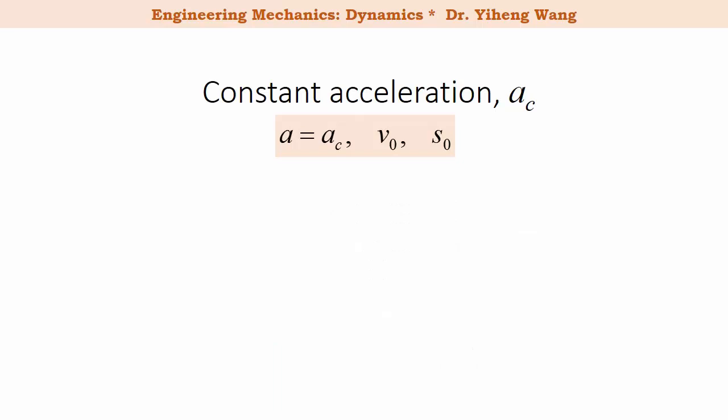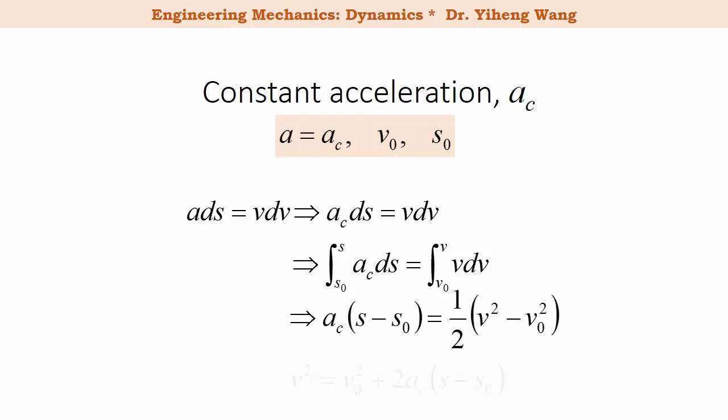And with the last kinematic equation, a ds equals v dv, substitute a with constant acceleration ac, integrate both sides, on the left from the initial position s₀ and on the right integrate from the initial velocity v₀. And we get this formula after rearrangement.